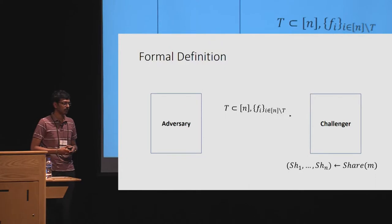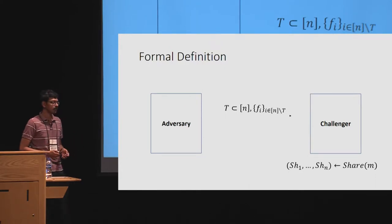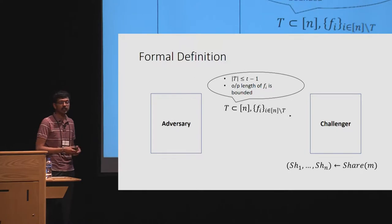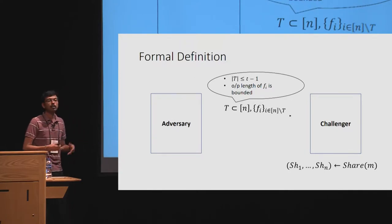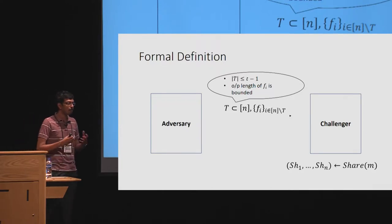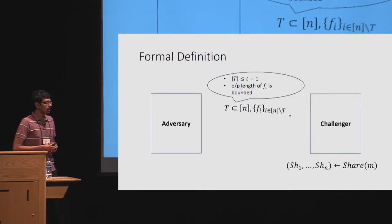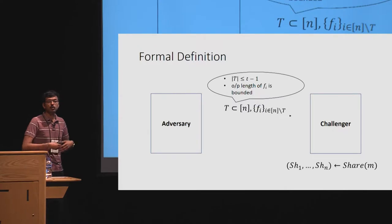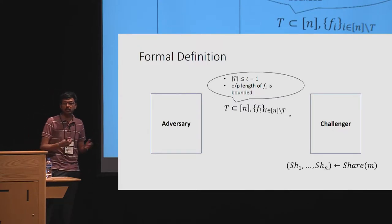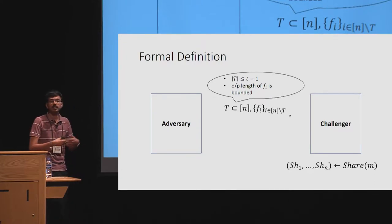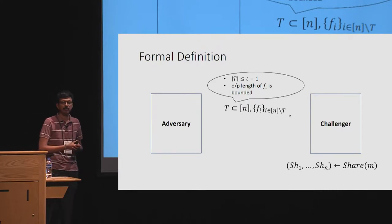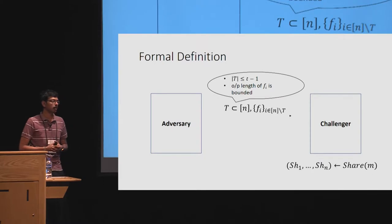The formal definition is modeled as a game between an adversary and a challenger. The challenger first generates a sharing of some secret message with shares sh1 to shn. The adversary gives a set T of corrupted parties, as well as leakage functions fi to be applied on the honest parties' shares. We require the size of T to be at most t minus 1, and the output length of each function fi to be bounded.